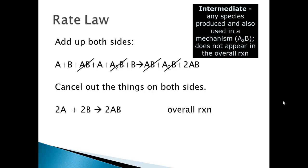A side note on vocabulary: an intermediate is any species that is produced and also used in a mechanism but does not appear in the overall reaction. Of the things that got canceled — AB and A2B — AB is not an intermediate because it shows up in the overall reaction. So the only intermediate for this mechanism is A2B.